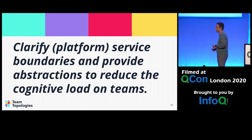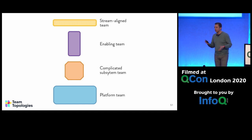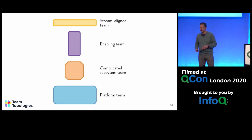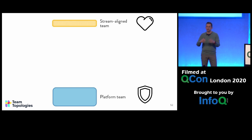Essentially we want to clarify the boundaries of the platform, the services it provides, and provide good abstractions to reduce cognitive load on the teams. In Team Topologies, we talk about four different types of teams. Stream-aligned teams are the ones that provide customer value. Then there are three other types of teams that support and help reduce cognitive load: enabling teams, complicated subsystem teams, and platform teams. The platform team shields the details of lower-level services that stream teams need for deployment, automation, monitoring, CI/CD.